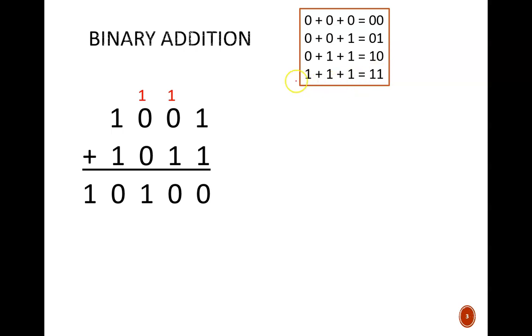And the final possibility is 1 plus 1 plus 1, which makes a sum of 11. Now in these examples, the ones and zeros might be added in different orders, but that doesn't change the sum, thanks to the commutative law.